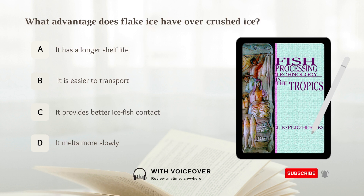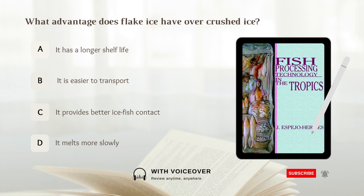What advantage does flake ice have over crushed ice? A. It has a longer shelf life. B. It is easier to transport. C. It provides better ice-fish contact. D. It melts more slowly. The answer is C — it provides better ice-fish contact.